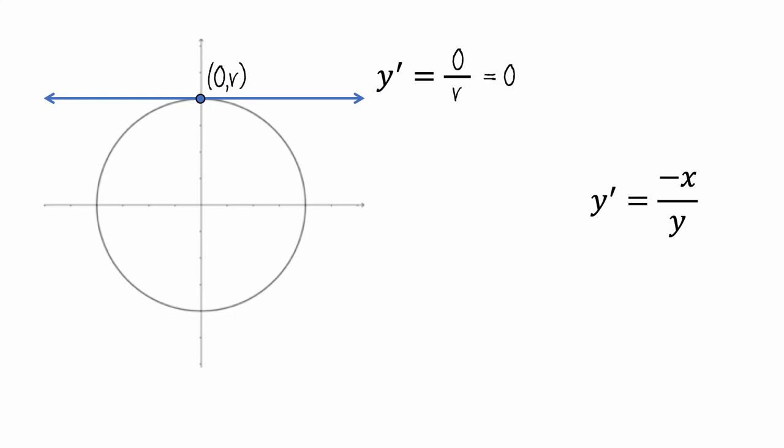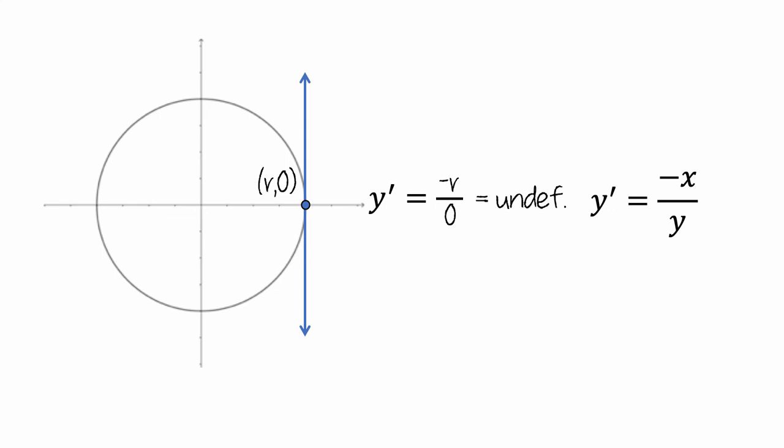What about at another point? How about the point (r,0), our formula says that the slope of this tangent line should be negative 1 times the x-coordinate, r, divided by the y-coordinate, 0. Since the denominator is 0, the slope is undefined, which matches what we can see in the graph, that the tangent line is vertical.